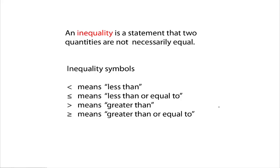So instead of having an equal sign like we did with equations, now we're going to have one of these four inequality symbols. The first one means less than. If you put a little line underneath the less than symbol, you have less than or equal to. If the symbol goes in the other direction, it means greater than. And with the line underneath, it means greater than or equal to.